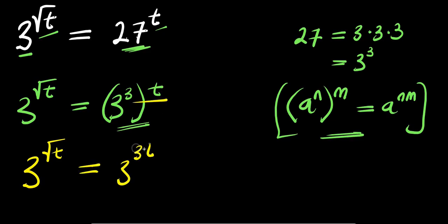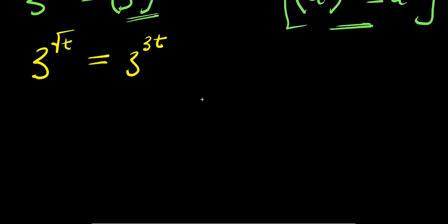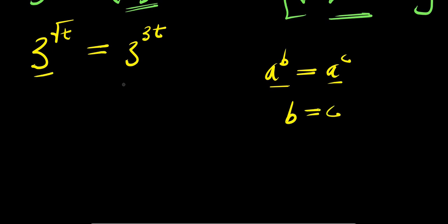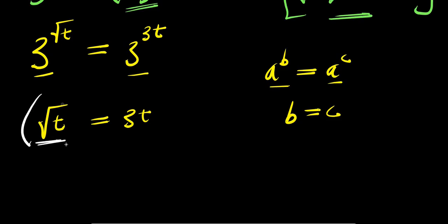Now let's consider this other identity: if you have a power b equals a power c, when the bases are the same, you compare the exponents — that is, b equals c. So since the base 3 is the same on both sides, we are going to have root t equals 3 times t.